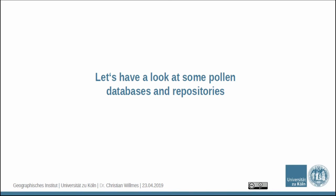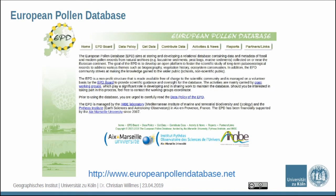We now look at some existing repositories and databases for palynology. One larger one is the European Pollen Database — you can find it at its URL. This database is maintained by several institutions and has a really complex entity-relationship diagram. You can download it as a Postgres dump or in Paradox format, an older relational database format. It's quite technically advanced to make use of this dataset, and if you're not into administrating databases, it might be a difficult task.